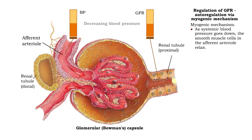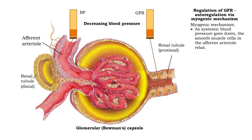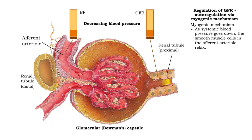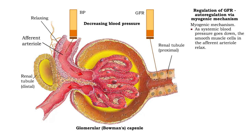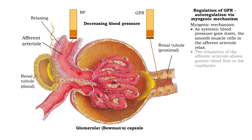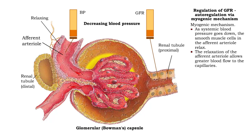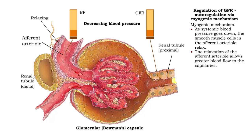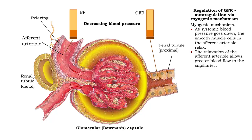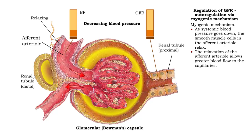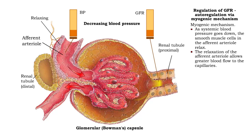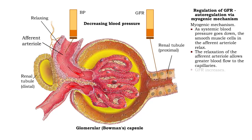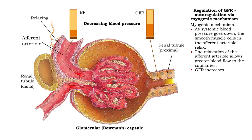As systemic blood pressure goes down, the smooth muscle cells in the afferent arterioles relax. The relaxation of the smooth muscle cells in the afferent arterioles increases blood flow to the glomerular capillaries. Glomerular filtration rate increases.